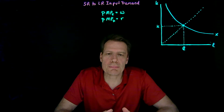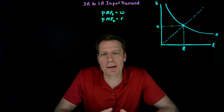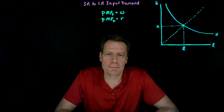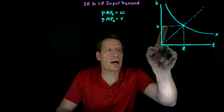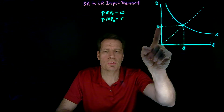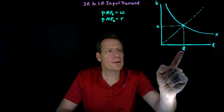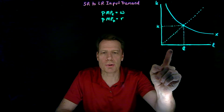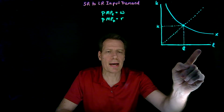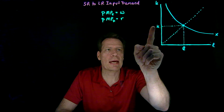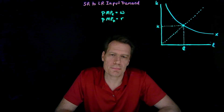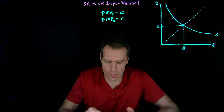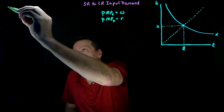We now want to be more precise by splitting what happens into the short run and the long run. In the short run, capital is fixed, so you can only operate on that horizontal slice. You can move to the left by letting some workers go, or to the right by hiring additional workers, but you can't move up or down because capital is fixed in the short run. So let's return to the case of an increase in the wage.